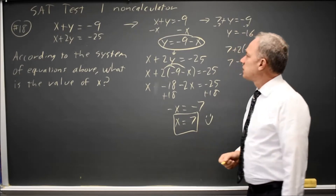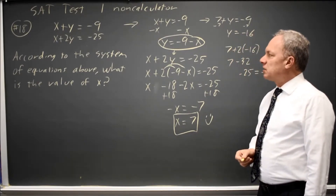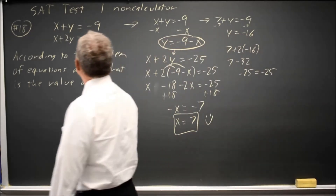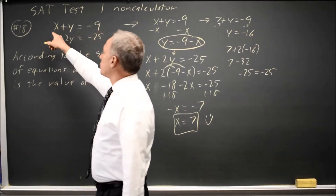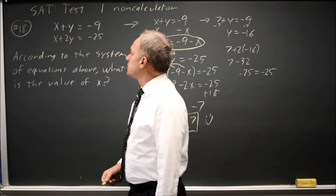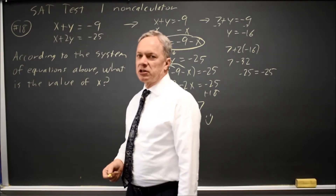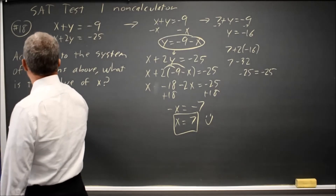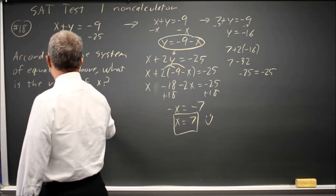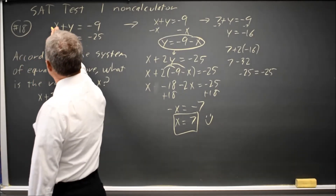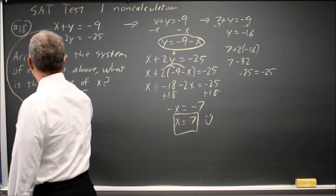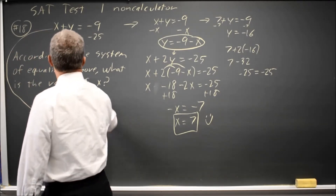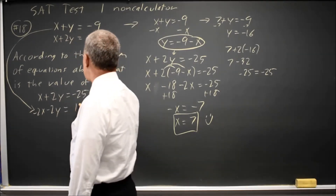So x equals 7 is my answer. I can also solve this with linear combination. If I want to be left with x, I'm going to have to eliminate the y. The second equation is x plus 2y equals negative 25. The first equation, if I multiply through by negative 2, gives me negative 2x minus 2y equals positive 18.